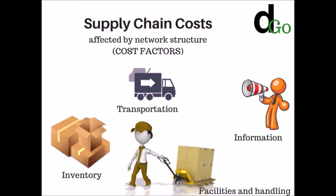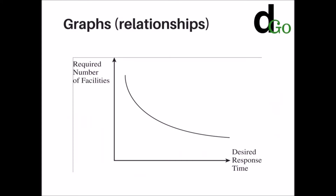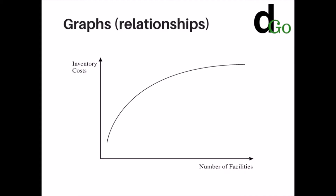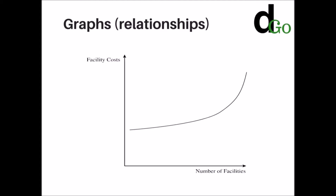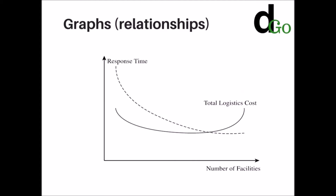There are different graphs to illustrate these relationships. In the first graph, the curve is convex to the origin — the more the required number of facilities, the lesser the response time. For inventory cost, as the number of facilities increases, inventory cost increases at a decreasing rate. For transportation cost, it initially decreases as facilities increase, then after a point starts increasing. Facility costs increase at an increasing rate with the number of facilities. Finally, total logistics cost starts decreasing initially, then begins increasing as the number of facilities increases.